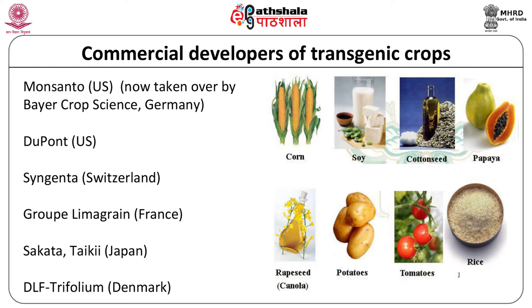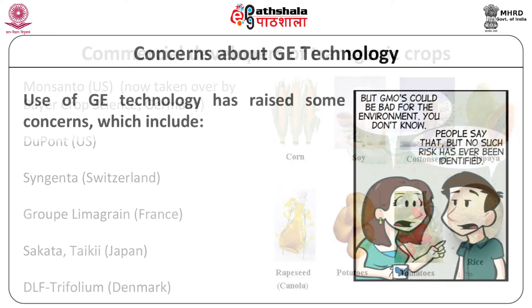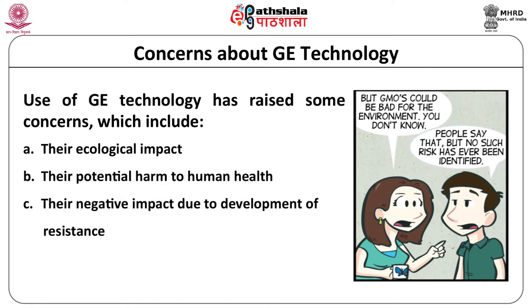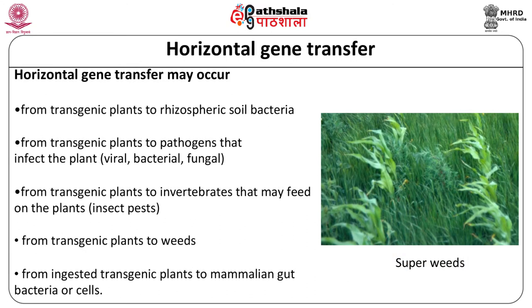The size of conglomerates handling transgenic seeds is only growing with mergers between these companies like the recent one between Bayer and Monsanto. Besides the advantages offered by GE technology, there are some concerns raised regarding the ecological impact of genetically modified crops, the impact on human health, the development of resistance in insect pests, as well as the prospect of agriculture moving out from the hands of farmers to corporate companies. The main ecological concern is that horizontal gene transfer may occur from the transgenic plant to other organisms, leading to undesirable effects on the ecosystem.